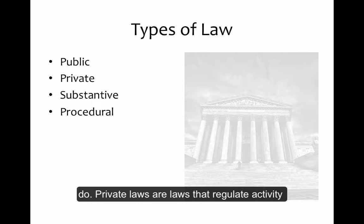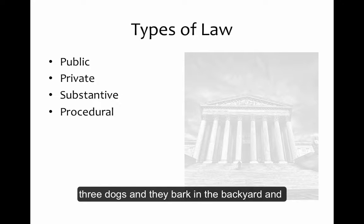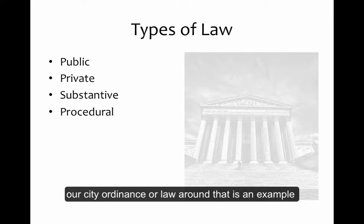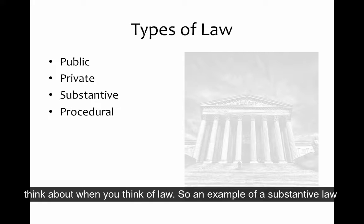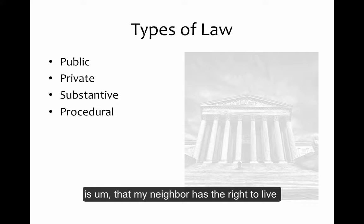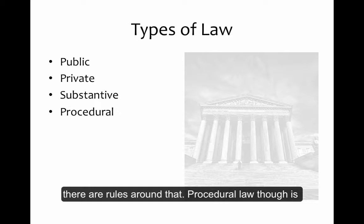Private laws are laws that regulate activity between people. For example, I have three dogs and they bark in the backyard, and our city ordinance or law around that is an example of a private law. Substantive law is probably what you think about when you think of the law — for example, my neighbor has the right to live in a house that doesn't have constant barking dogs, and there are rules around that.